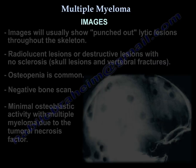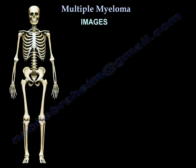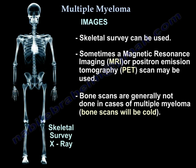Imaging typically shows punched-out lytic lesions throughout the skeleton — radiolucent destructive lesions with no sclerosis. You will see skull lesions, vertebral fractures, and osteopenia. The bone scan is negative due to minimal osteoblastic activity caused by tumor necrosis factor. A skeletal survey is used, sometimes MRI or PET scan.